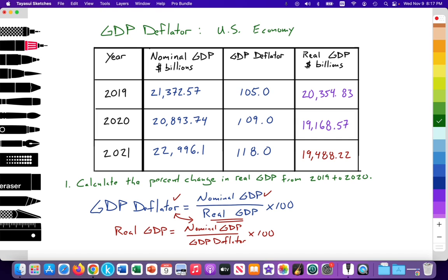The next column is illustrating nominal GDP. With nominal, we have changes in prices and the quantity of output — not a very reliable macroeconomic statistic because of the two variables that are changing. We see the decrease in nominal GDP from 21,372 billion to 20,893 billion due to the pandemic and reduced consumption and investment spending, and then the rise as we came out of the pandemic.